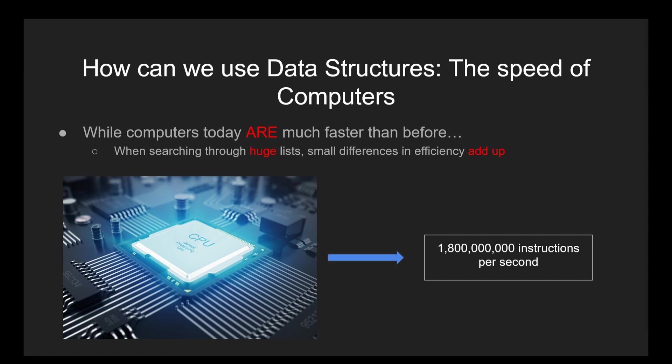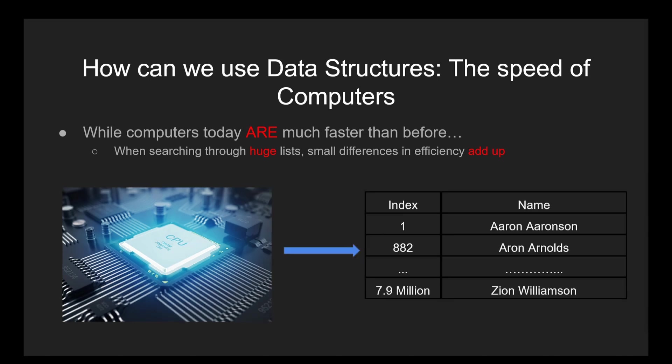You may think that there is little difference between searching algorithms since computers nowadays can perform millions of calculations per second, but when you are a huge multi-billion dollar corporation trying to find a certain data point in a list containing thousands or even millions of data points, small differences in efficiency are going to make or break the user experience. Even a 1% improvement in efficiency can mean big differences in the amount of time a user is waiting for a simple task.